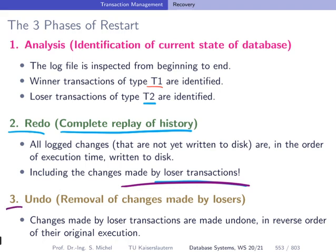Then in the last phase, in the third phase, the undo phase, we remove changes made by loser transactions. And we do this, of course, in reverse order of the original execution. That means we go back the file from the back to the beginning.